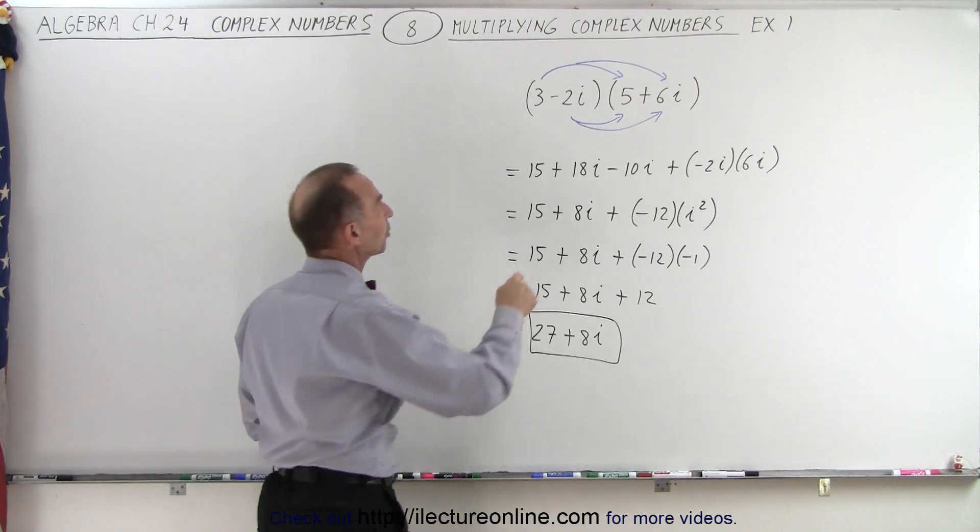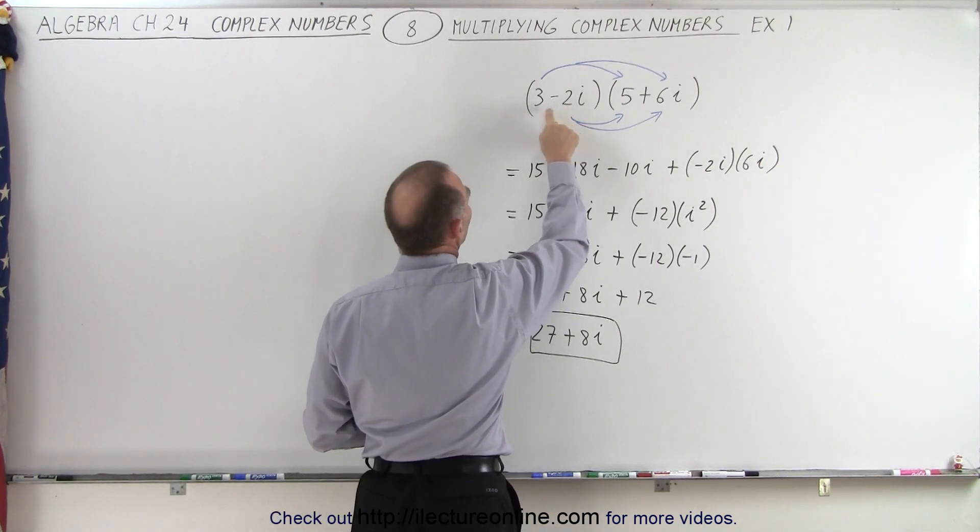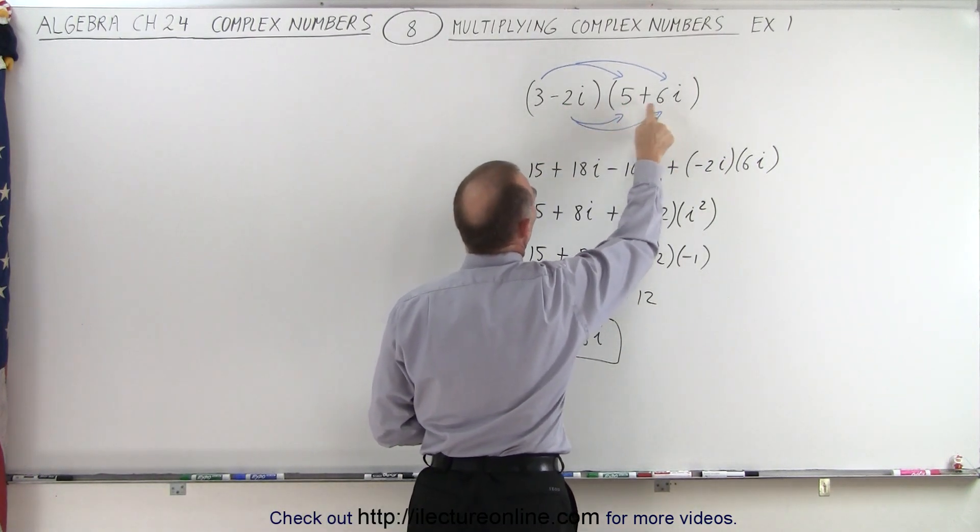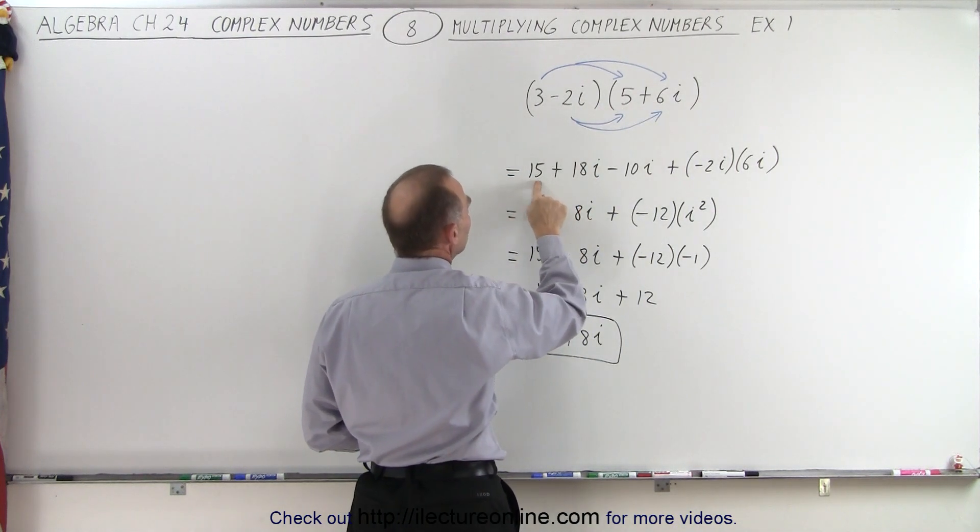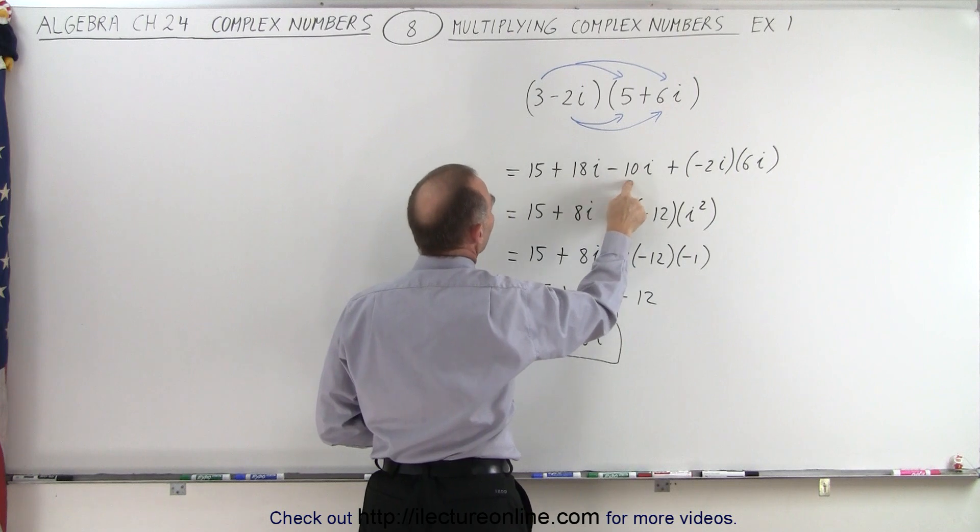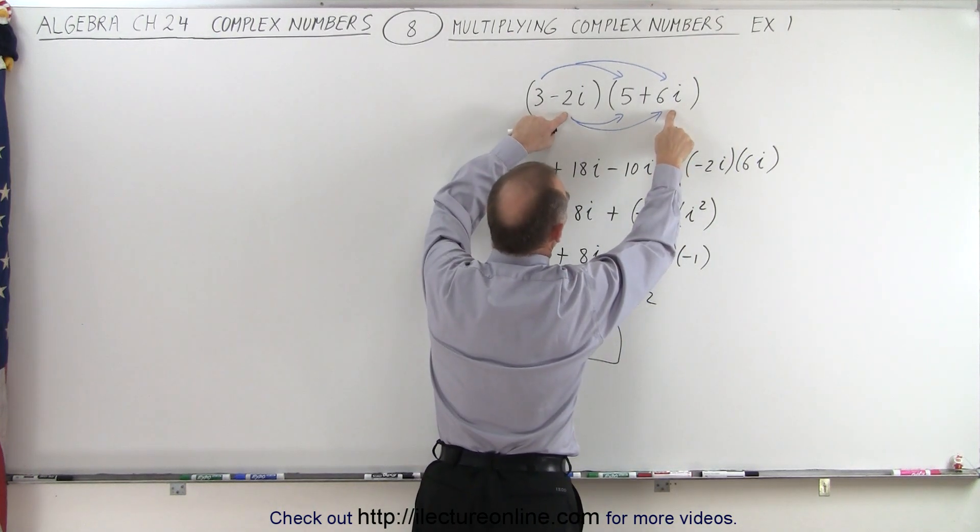So again, we multiply each of the two terms of the first binomial times each of the two terms of the second binomial. So we end up with four products. 15 plus 18i minus 10i plus the product of the last two.